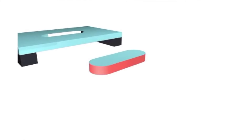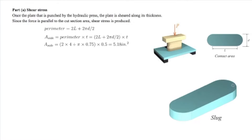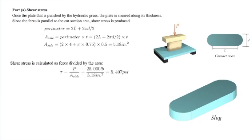To determine the cross-section area, we need to determine the perimeter of the slug and multiply it by the thickness. The perimeter of the slug consists of two lines of length l on the top and bottom and two half circles. The perimeter of a full circle is pi multiplied by d, so the total perimeter is 2l plus pi times d. The shear area is the perimeter multiplied by the thickness, and shear stress is simply the force divided by that cross-section area.